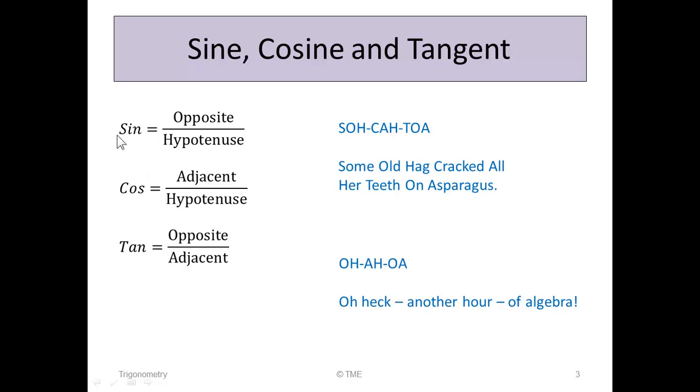It's remembered as SOH for sine opposite hypotenuse, CAH for cos adjacent hypotenuse, and TOA for tan opposite adjacent. SOH-CAH-TOA.